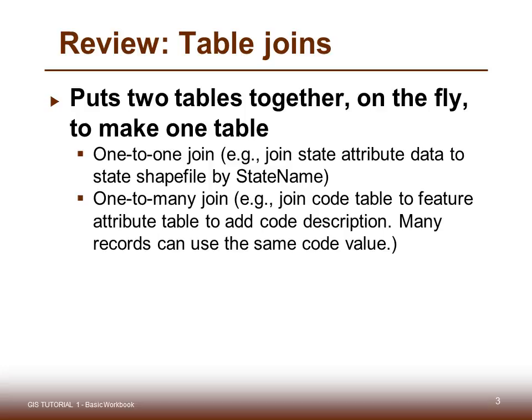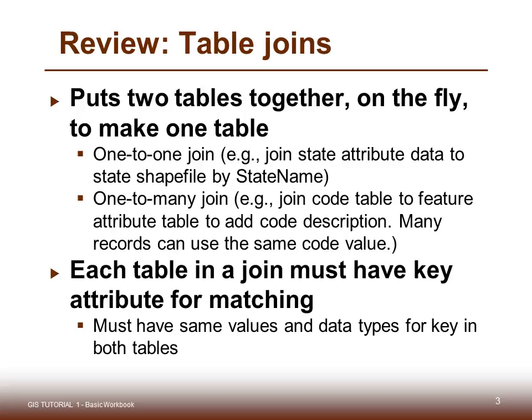Each table in a join must have a key attribute for matching. This is a unique identifier, so they must have the same values and data types in the key in both tables. By data type, we mean that data is sometimes text and sometimes numeric, and they have to be the same type in order for the join to work.